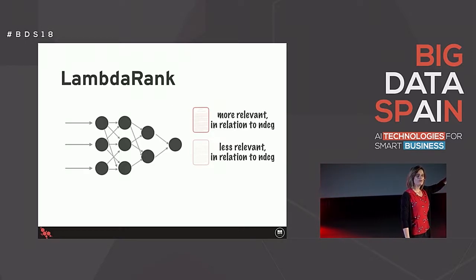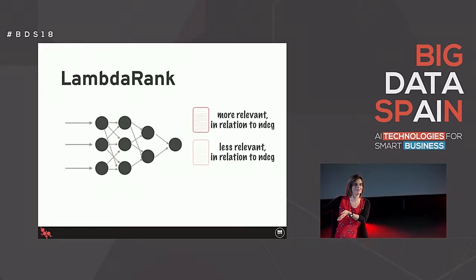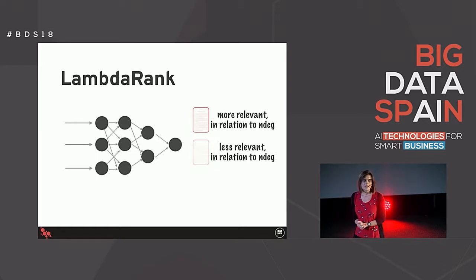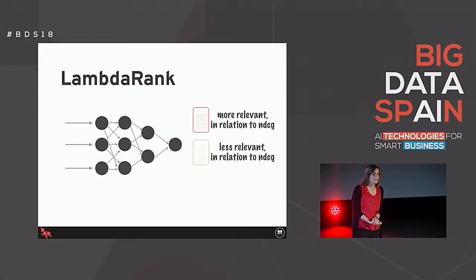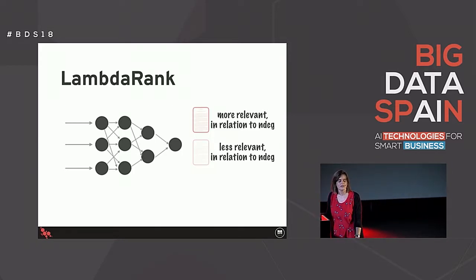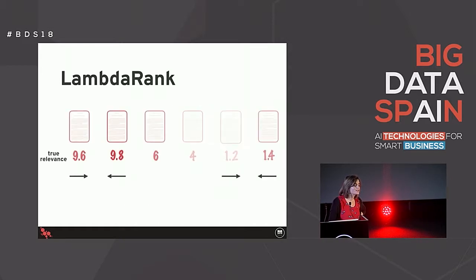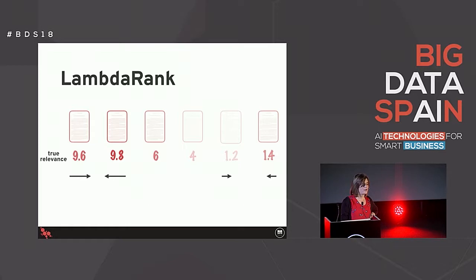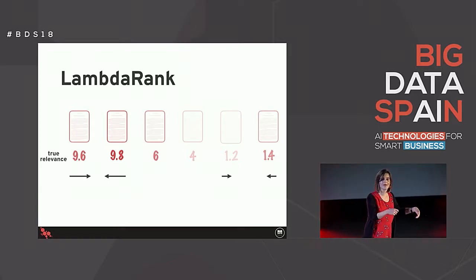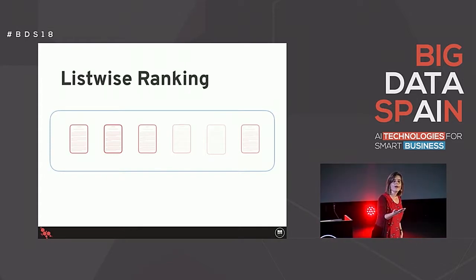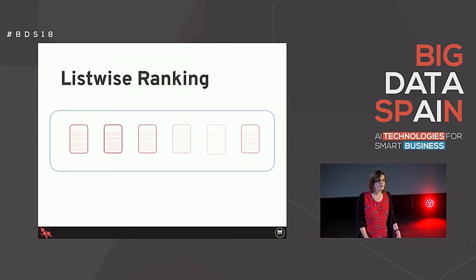RankNet was pushing things at the top of the list up and down by the same amount as things at the bottom. But we said we care more about what happens at the top - you're never going to go to the last page of Google. So LambdaRank also uses that feed-forward neural network technology, but the way it pushes documents takes NDCG into account. Documents at the top get pushed more - the weights are updated so they are pushed more - and the ones at the bottom are pushed less.